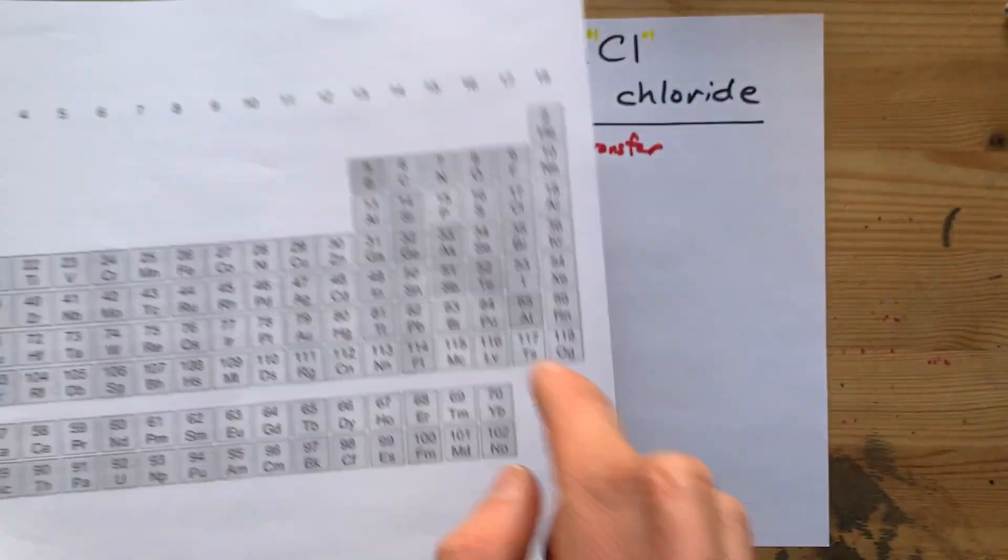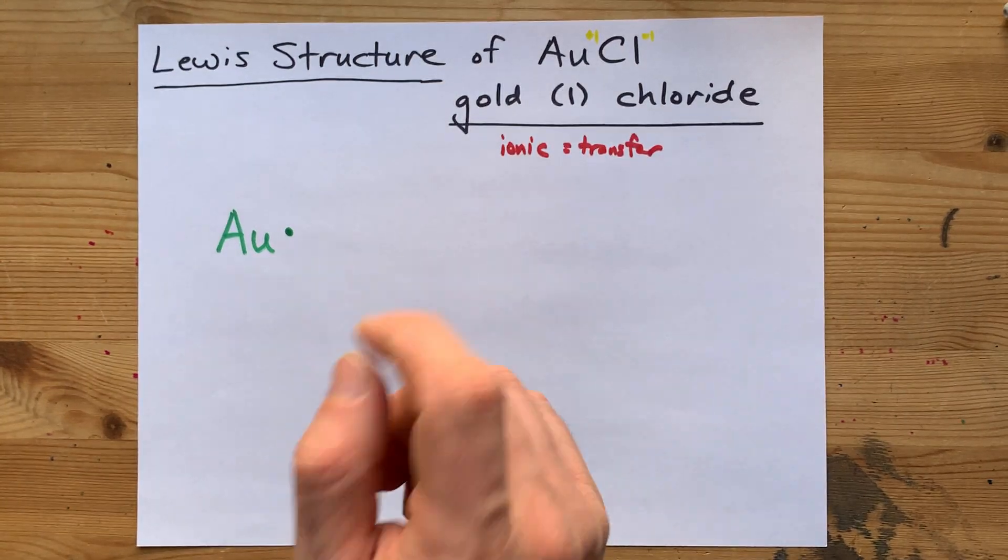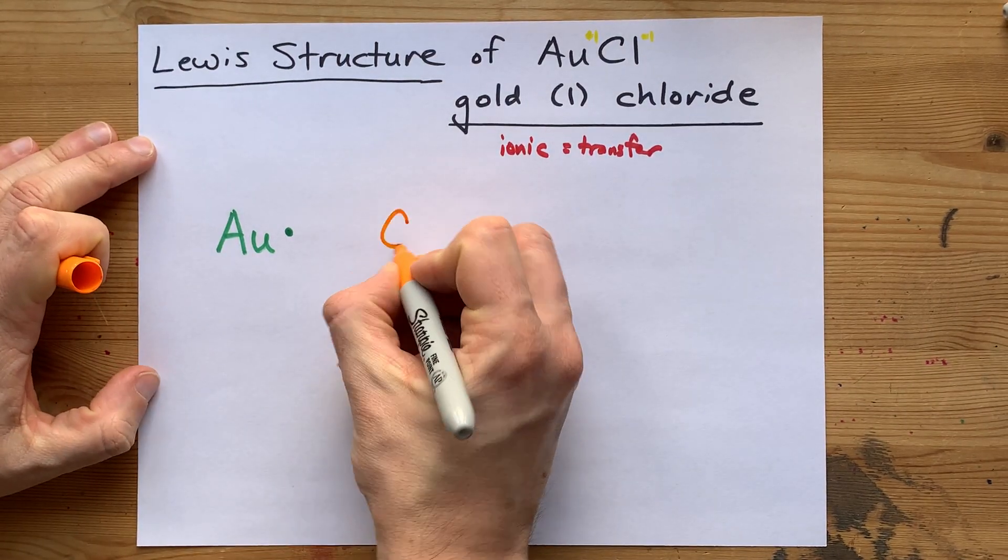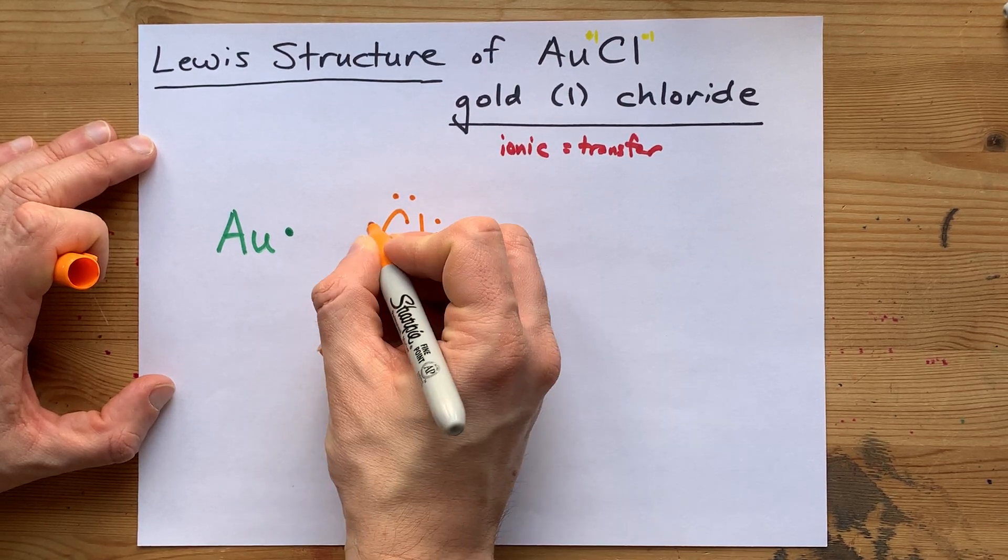Chlorine was in group 17. I already showed you that. That means it brings seven valence electrons with it. There's your Cl with the 1, 2, 3, 4, 5, 6, 7.